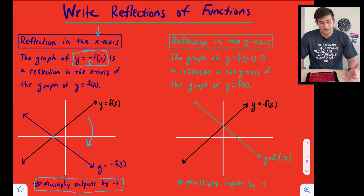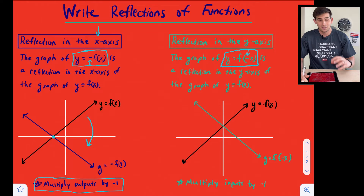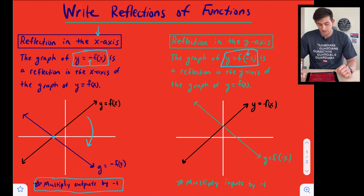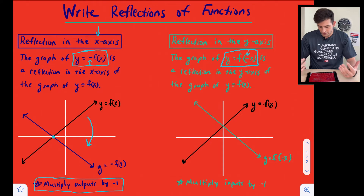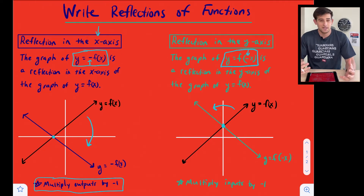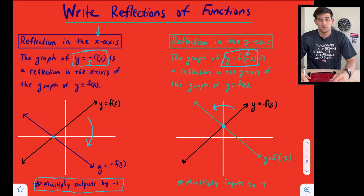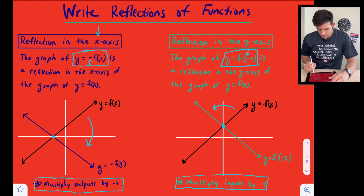The other type is reflecting on the y-axis. Notice now where the negative sign is located — it is on the inside, meaning we are making x opposite, which are our input values. If we make x opposite, it's a reflection in the opposite axis, so we're reflecting in the y-axis. Our original function y equals f of x is in black, and the y-intercept stays in the same place, like folding the graph on the y-axis. What we are doing is multiplying our input values by negative one when we reflect in the y-axis.